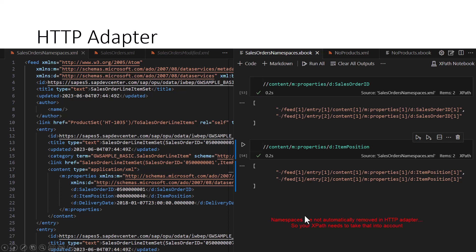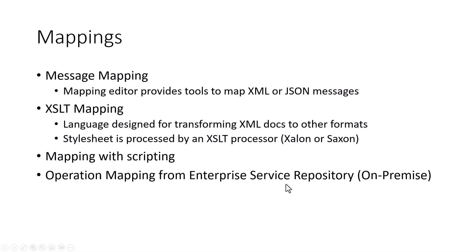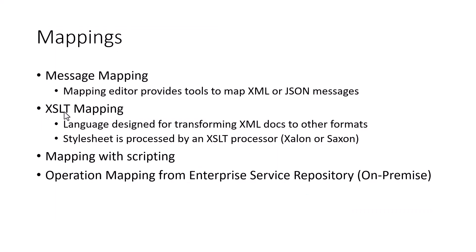Because we shouldn't rely on this prefix, we want some mechanism to remove the namespace. For this, we have quite a few ways to do it, but we are going to use XSLT mapping. You can also use message mapping or scripting to do the same thing. In our case, we are going to use XSLT mapping. I'm going to take a quick detour to show how XSLT mapping works.